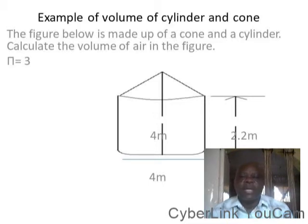Like the example we have on the slide, this is a composite shape, a shape that is composed of a cone and a cylinder. If you look at it, you have this cylinder which has a height of 2.2 meters and a cone which is on top of the cylinder. Now how do you solve a problem like this?